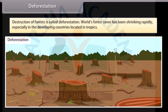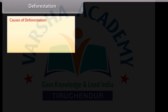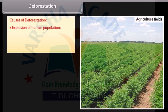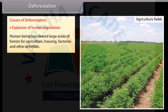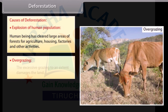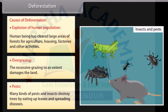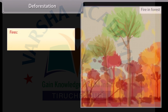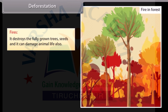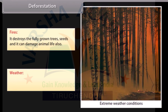Deforestation: Destruction of forests is called deforestation. The world's forest cover has been shrinking rapidly, especially in developing countries located in the tropics. Causes of deforestation include the explosion of human population — human beings have cleared large areas of forest for agriculture, housing, factories, and other activities — overgrazing, pests and insects that destroy trees by eating leaves and spreading diseases, fires that destroy fully grown trees and seeds and damage animal life, and extreme weather conditions such as heat and storms.